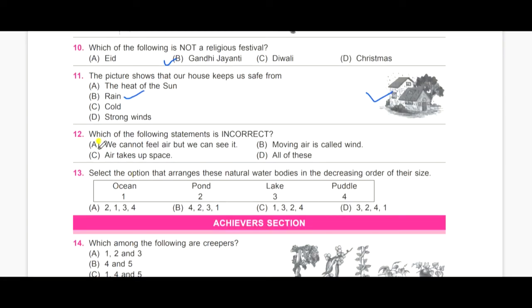Twelfth one. Which of the following statements is incorrect? A, we cannot feel air but we can see it. B, moving air is called wind. C, air takes up space. And D, all of this. So, children, you need to note down which is the incorrect. Yes, it is A. We cannot feel air but we can see it.